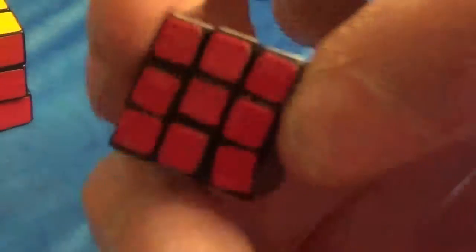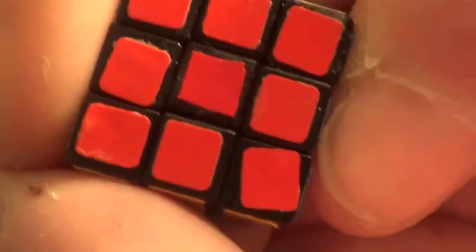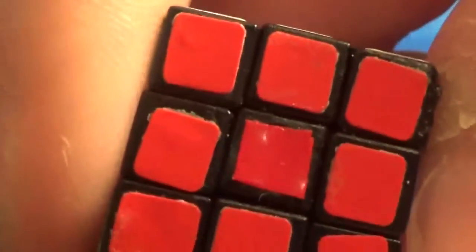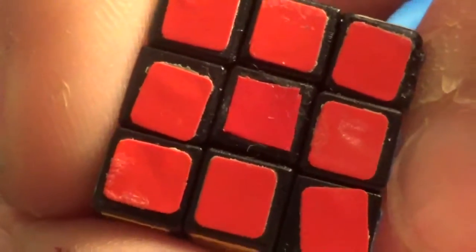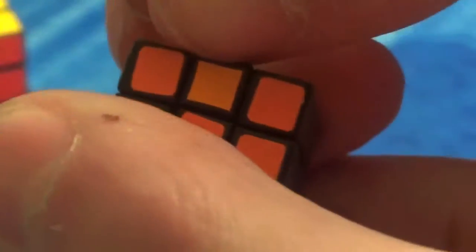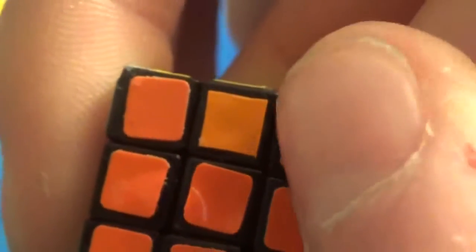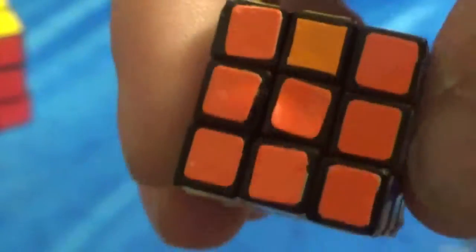And the red center sticker was missing, so I had to make my own. And that orange sticker was missing, so I again had to make my own. And so that's why that orange edge is different from the shades of the rest of the orange one.